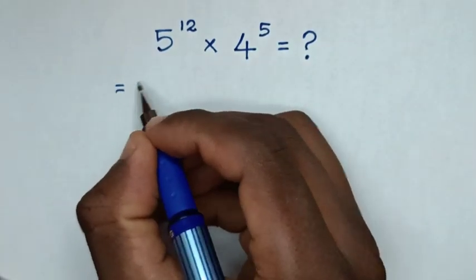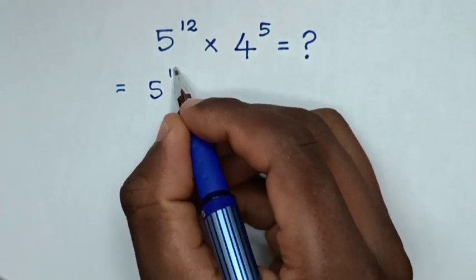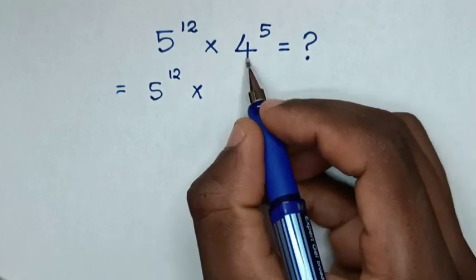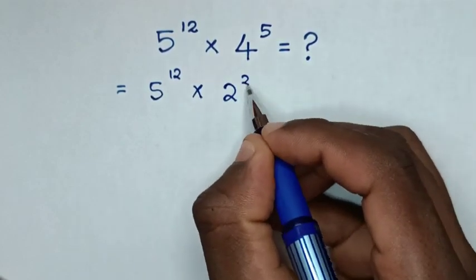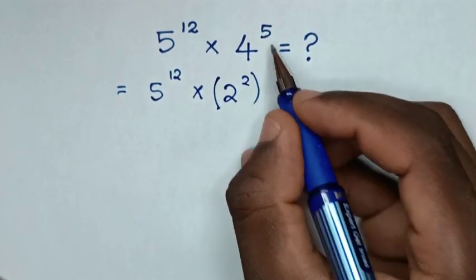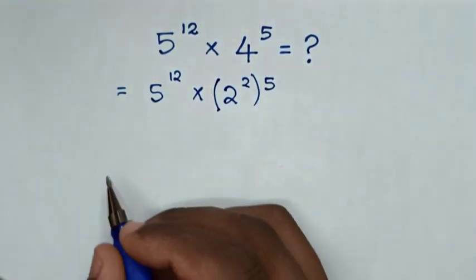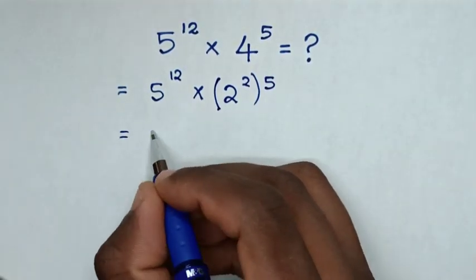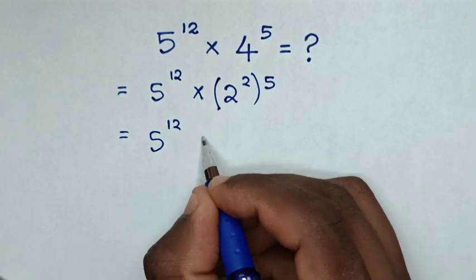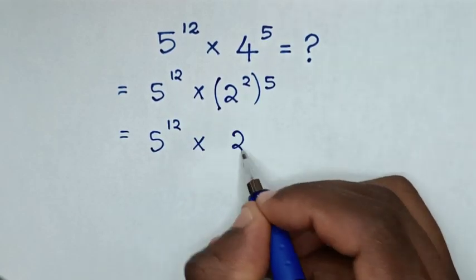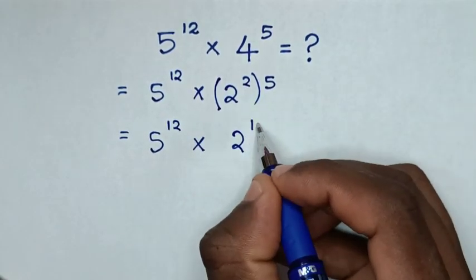So, it will be equal to 5 power of 12 times 4, which is the same as 2 power of 2, in bracket, power of 5. Then it will be equal to 5 power of 12 times 2 power of 10.